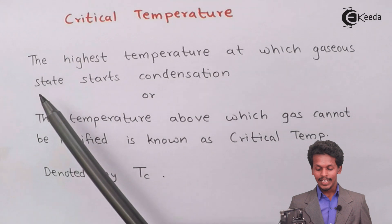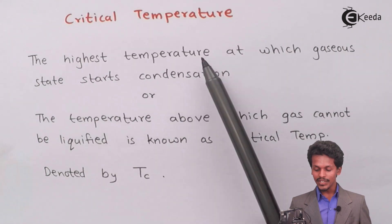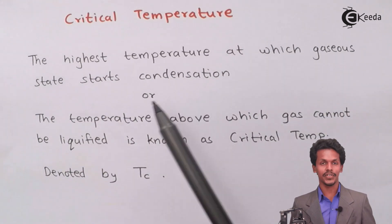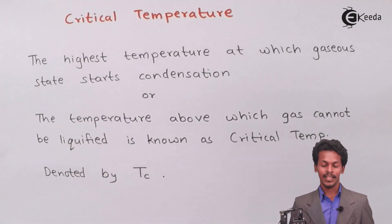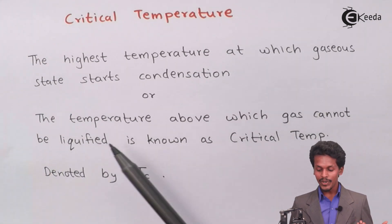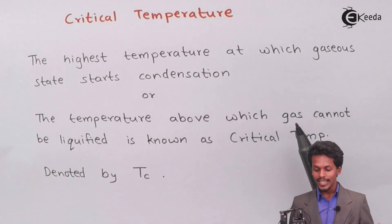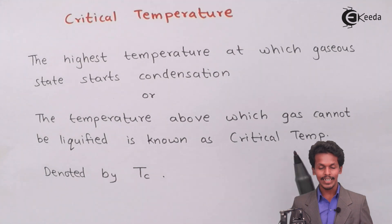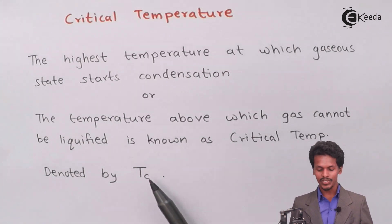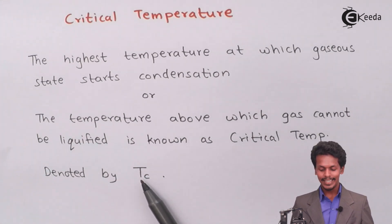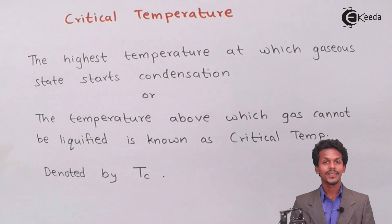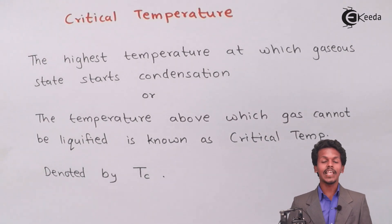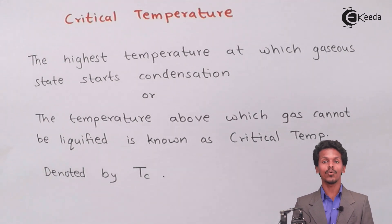The first thing is the highest temperature at which the gaseous state starts condensation, or we could say it as the temperature above which gas cannot be liquefied, is known as critical temperature. Critical temperature is denoted by T subscript C.